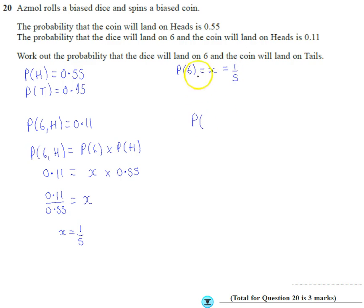I want to work out the probability that the dice will land on 6, the probability of getting a 6, and the probability of getting a tails. Well, that's the probability of getting a 6 multiplied by the probability of getting a tails.